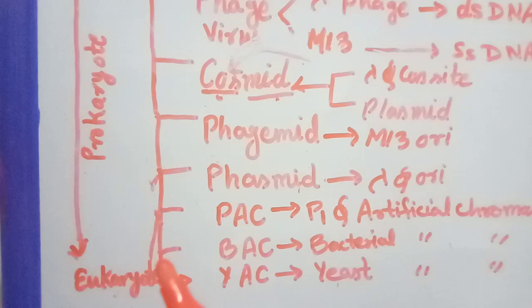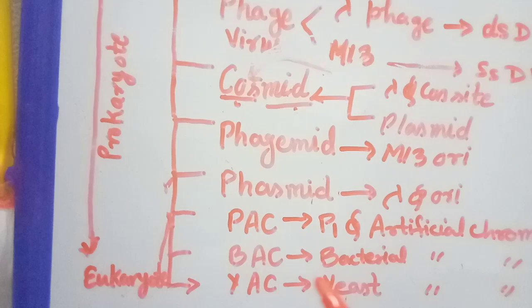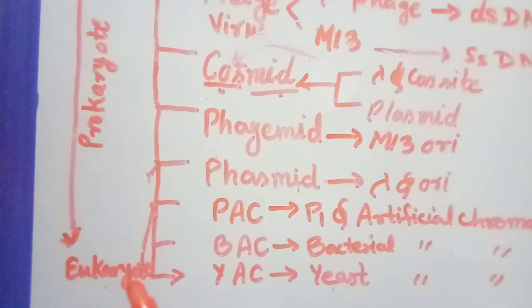If you are going to clone the insert in eukaryotes, these will not be helpful, so there is a need for certain artificial chromosomes like yeast artificial chromosome, which will help where we can see splicing, a characteristic of the eukaryote.